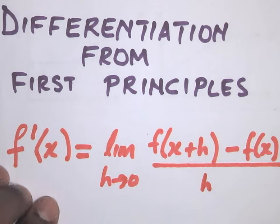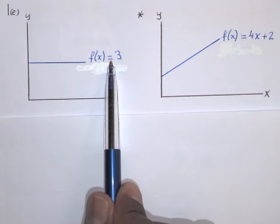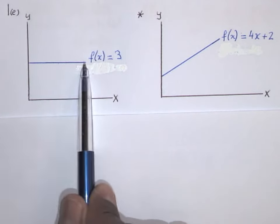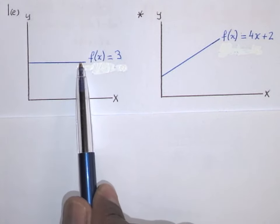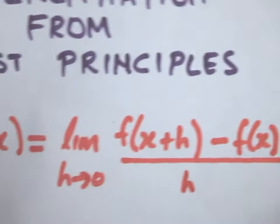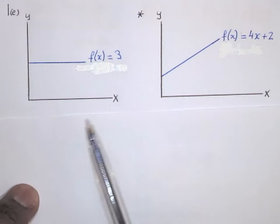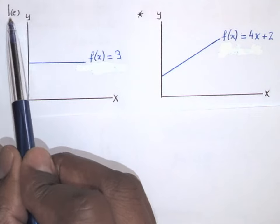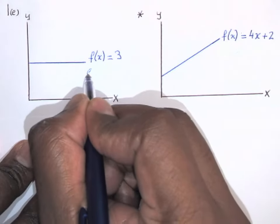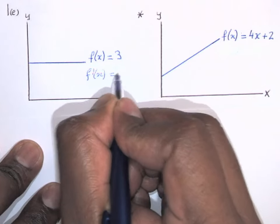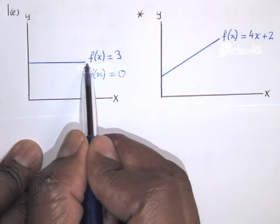We know from grade 9 that to find the gradient of the function f(x) equals 3, the gradient or the slope of that graph is just 0. So instead of doing the whole thing using first principles, referring back to question 1e, the answer you should have got was that f'(x), which is the gradient, was 0. Because the gradient is the slope or the steepness of the graph.